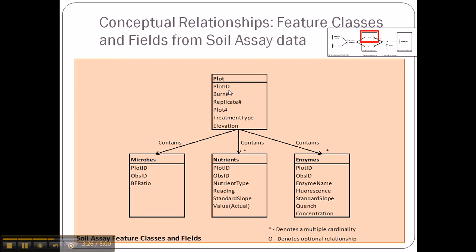At the plot ID, there are three important things. The soil assay variables connect to the plot attribute table, which includes the burn the plot is in, the replicate number — because there are four replicates within each burn — and the plot number. Corresponding to that is also the treatment type, since the treatment type isn't obvious from the plot number without looking it up. Finally, elevation is included because it seems to be a good indicator of what's going on.